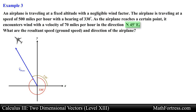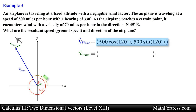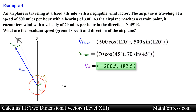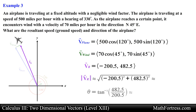Next we draw the vector representing the wind velocity, pointing 45 degrees east of north. For the components of the airplane's velocity, we use the 120-degree angle, which automatically handles the positive and negative signs on the components. We then find expressions for both the plane and wind velocity components, and add the vectors component-wise to obtain the resulting velocity.